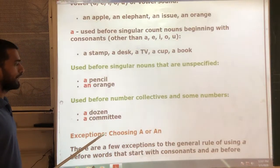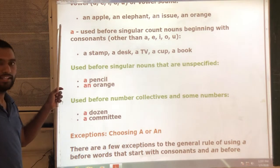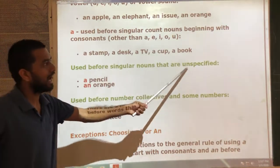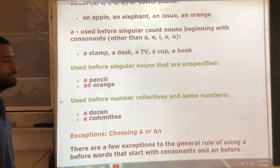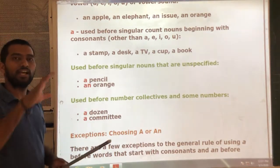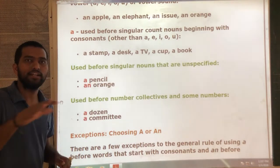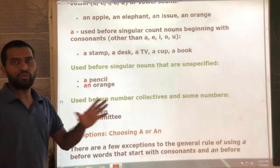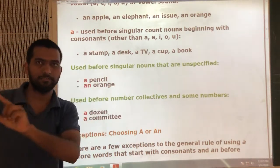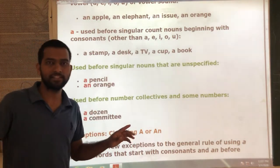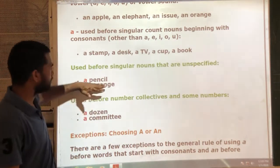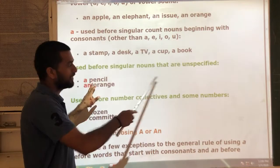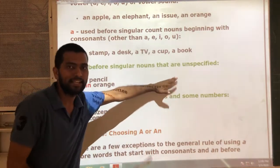There is one more important point: 'a' and 'an' are used before singular nouns that are unspecified. Unspecified means the noun is not identified. For example, 'a pencil' — we cannot say that pencil means this pencil or that pencil. Just a pencil. There are so many pencils; out of them, any pencil becomes 'a pencil', which is not the exact pencil we are mentioning.